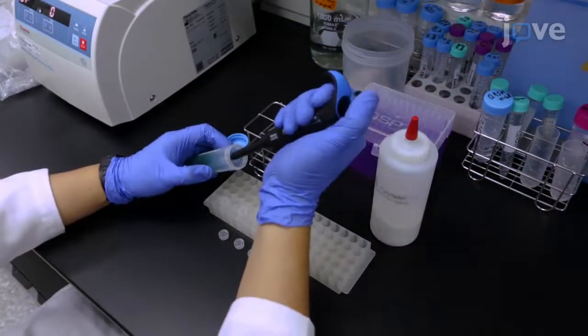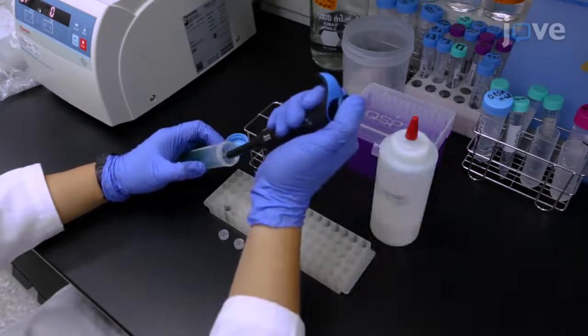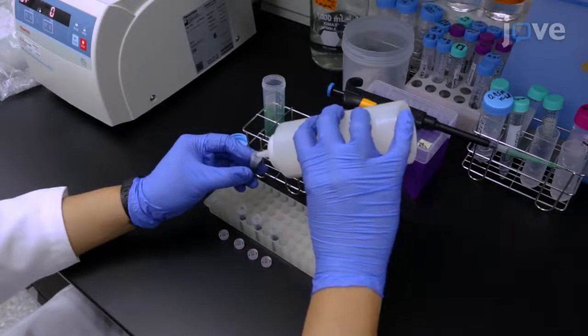Add 1 mL of cell suspension and 0.4 to 0.6 grams of 0.1 mm glass beads into a 2 mL screw cap vial.